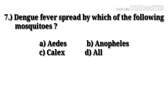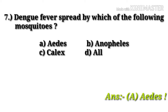Question number 7: dengue fever is spread by which of the following mosquitoes? Option A: Aedes, option B: Anopheles, option C: Culex, option D: all. Option A, Aedes, is the correct one for dengue fever.